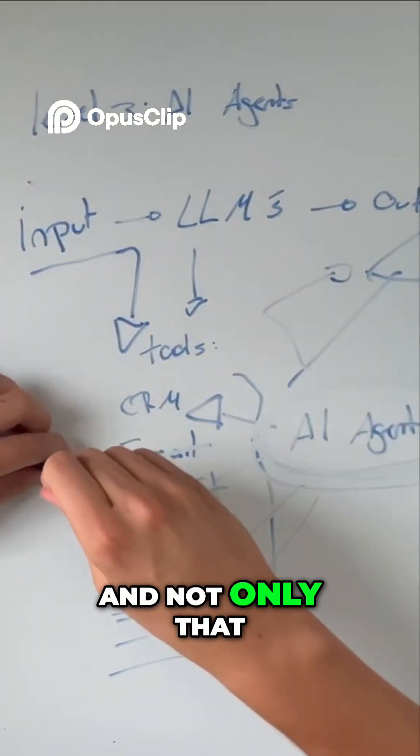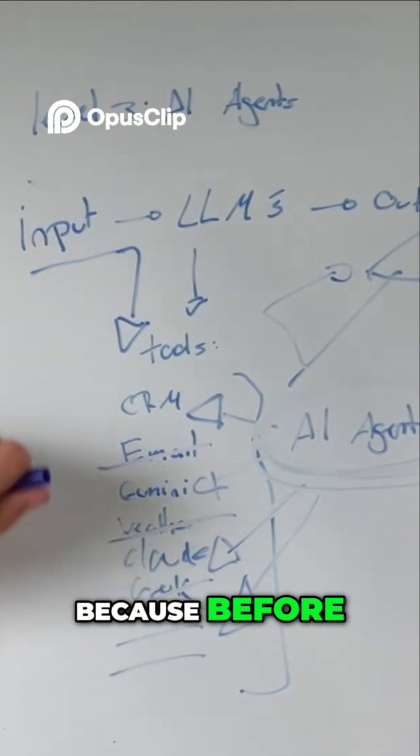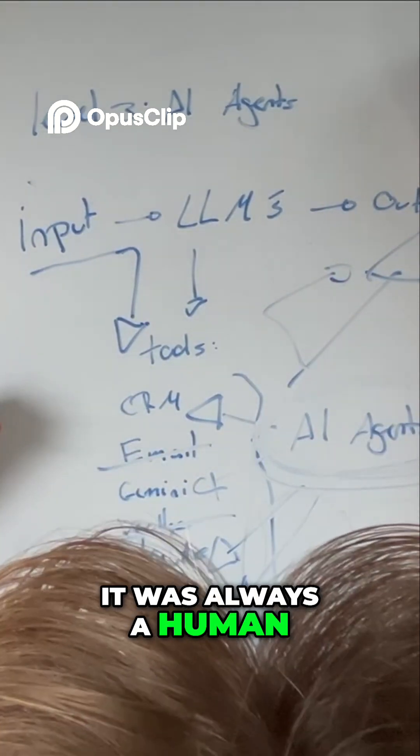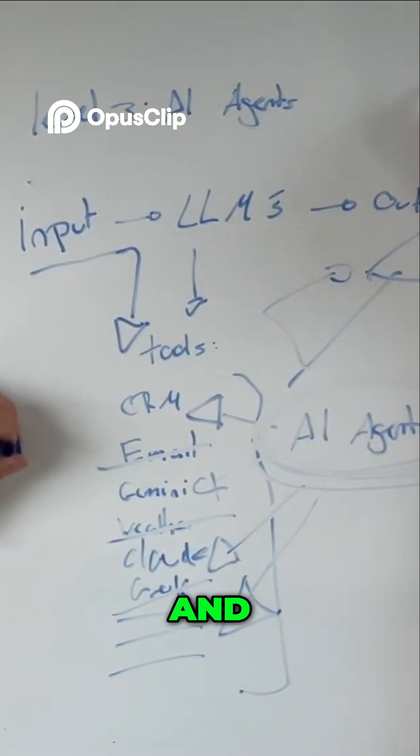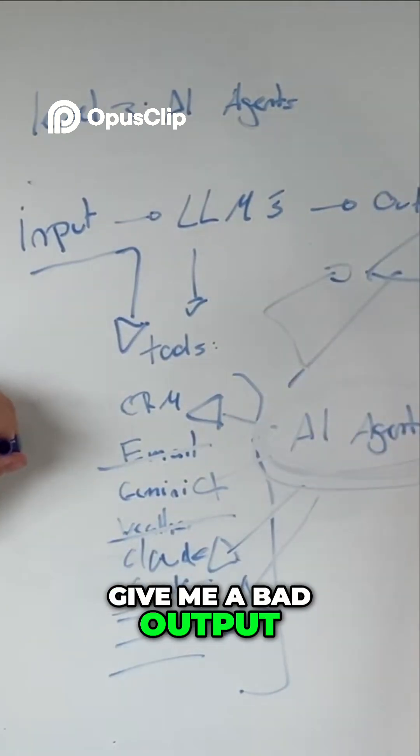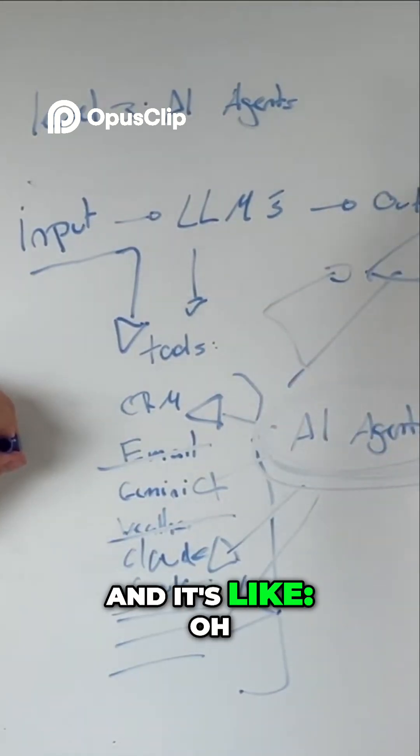And not only that, because before it was always a human who was judging the output. And for example, if this thing will give me a bad output, the human will be like oh I need to change a prompt and it will go back to this one.